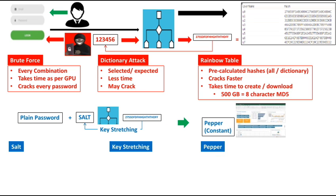This pepper is combined with the hash value, or with the plaintext password, salt, and pepper constant, and then the system grants access to the user if this process is correct.